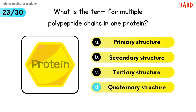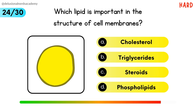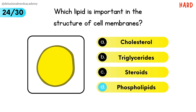Quaternary is the correct option. Which lipid is important in the structure of cell membranes? Phospholipid is an important component of the cell membrane.